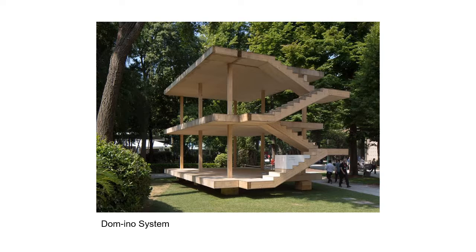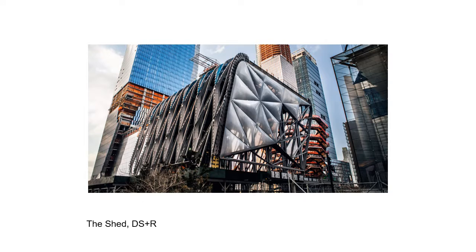Conventional design methods are restricted by construction techniques because of economy and efficiency. From classical architecture to the domino house prototype, the innovation of materials and construction techniques are changing the rules of the game for architects. The advanced practice and research for materials and construction techniques allow for local differentiation of building components that enable buildings that were unthinkable earlier.